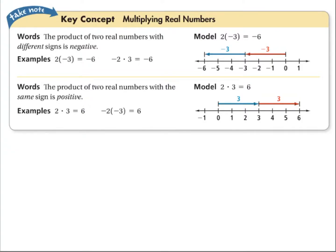We're just multiplying real numbers. These are the concepts. If we are multiplying, the product of two real numbers with different signs is always negative. So if you multiply a positive with a negative, you're going to get a negative answer. If you multiply two real numbers with the same sign, no matter what that sign is, you're always going to get a positive.